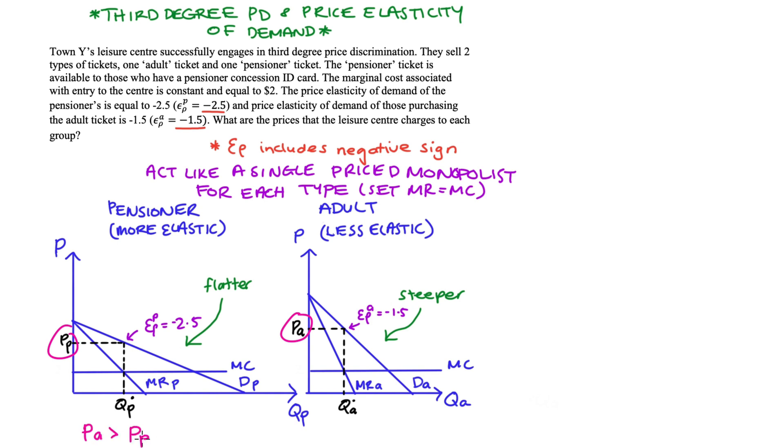So the price that we set for the more inelastic groups will be higher. This makes sense intuitively. A more inelastic consumer is less sensitive to price increases. So the firm essentially has more leeway to raise the price.